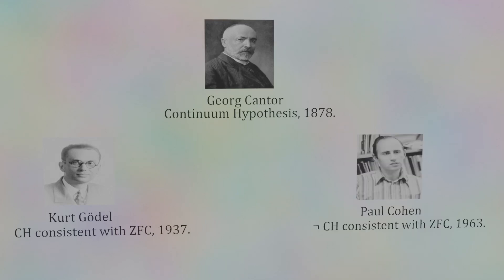Paul Cohen proved in 1963 that no contradiction would arise if the negation of the continuum hypothesis was added to set theory.